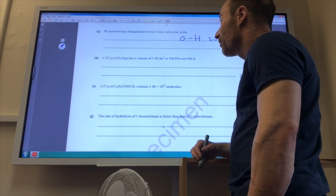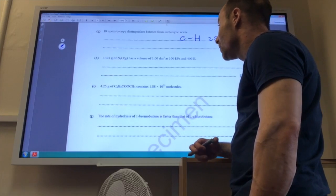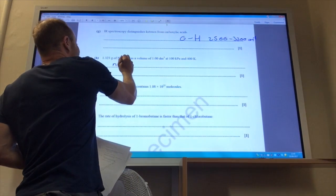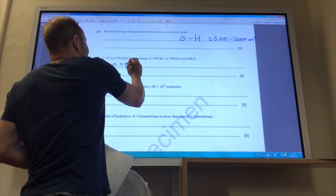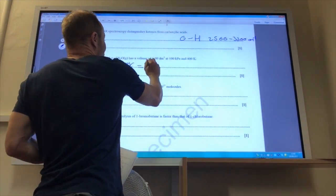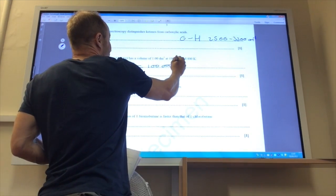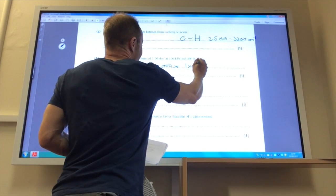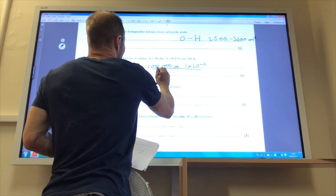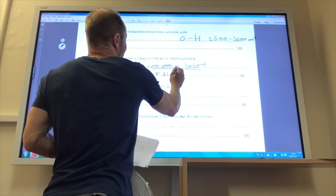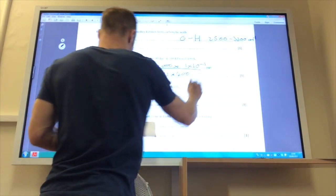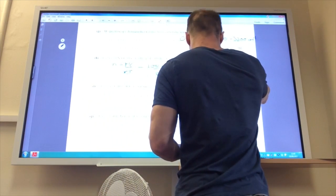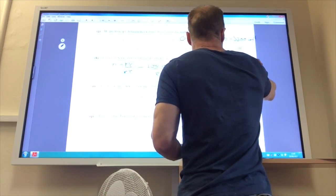1.323 grams of N2O has a volume of one decimetre cubed. For this one, you need to use your ideal gas equation. N equals PV over RT. The pressure is a hundred thousand pascals. The volume is 1 times 10 to the minus 3 metres cubed. R is 8.31. The temperature they've given you has been 400. You bang that calculation in and you get 0.0301 mole.